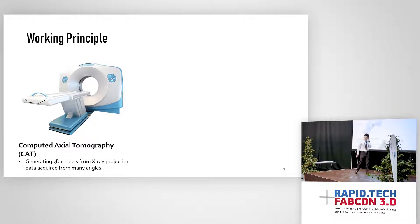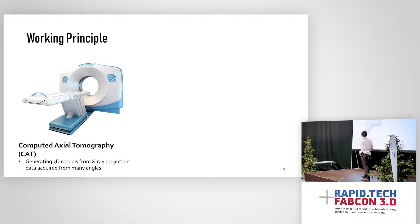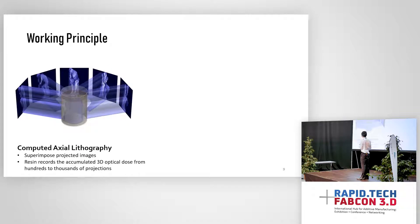How does it work? The principle is really similar to computed tomography seen in hospitals. In CT, a patient sits inside a machine, which scans them at many different angles and synthesizes a 3D image in the computer — that's why it's called computed axial lithography. Our technology utilizes the same principle, but instead of imaging, we superimpose all the projections into the same volume.